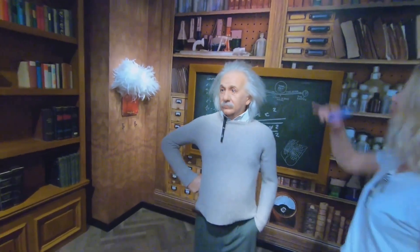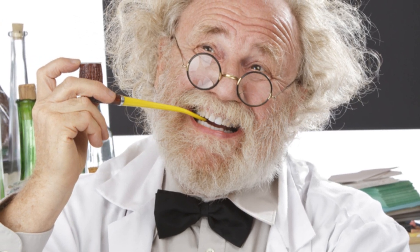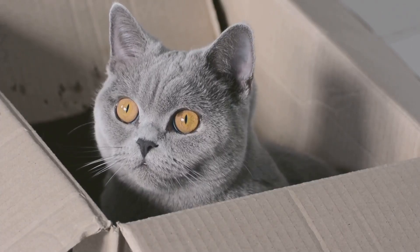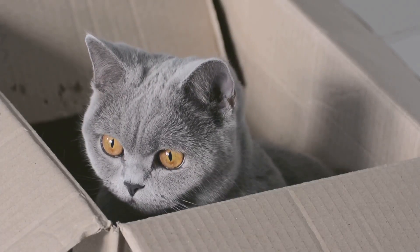Erwin Schrödinger, a pioneer of quantum mechanics, illustrated this concept with a thought experiment involving a cat, a box, and a radioactive atom. In this scenario, the cat's fate hangs in the balance, its life or death dependent on the atom's decay. Until observed, the cat exists in a superposition, both alive and dead.